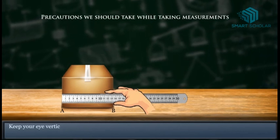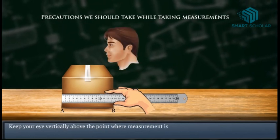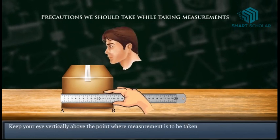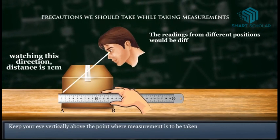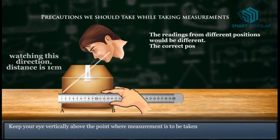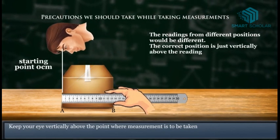Keep your eye vertically above the point where measurement is to be taken. The reading from different positions would be different. As shown above, the correct position is just vertically above the reading of the scale to be noted.